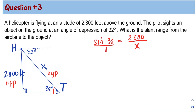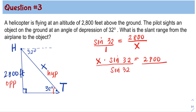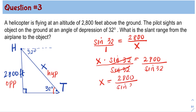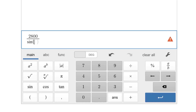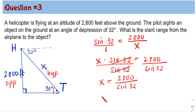We write sine 32 over 1 and then cross multiply: X times sine 32 is equal to 2,800. Next, we divide both sides by sine 32, so sine 32 divided by sine 32 is 1. Now we have X equal to 2,800 divided by sine 32. Plugging this into our calculator, the slant range from the airplane to the object is 5,283.82 feet.